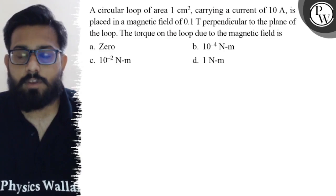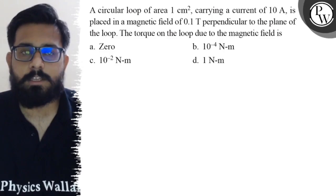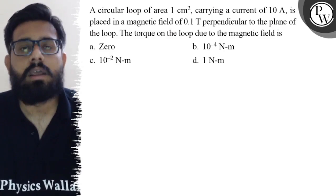Your first option is zero, second option is 10⁻⁴ newton-meter, third option is 10⁻² newton-meter, and the fourth option is 1 newton-meter.